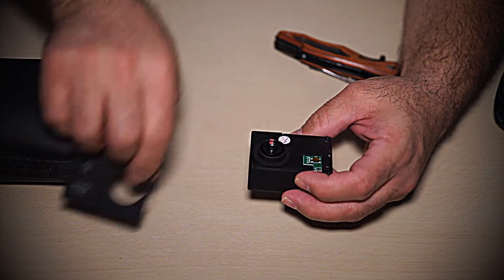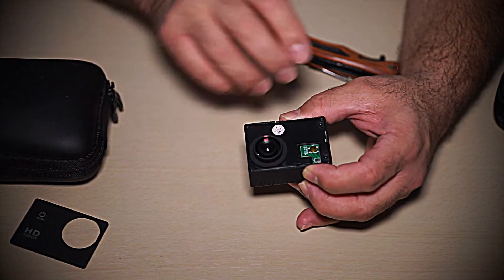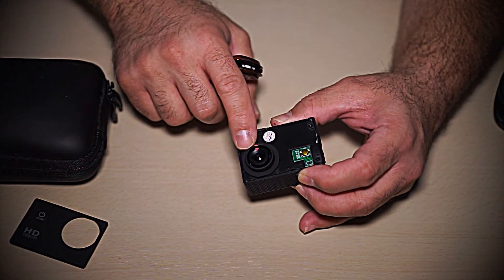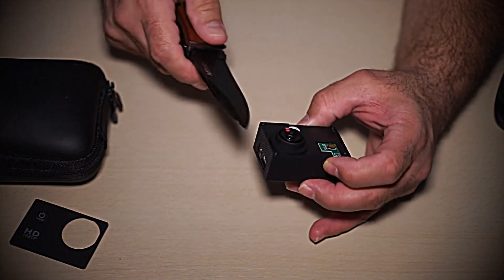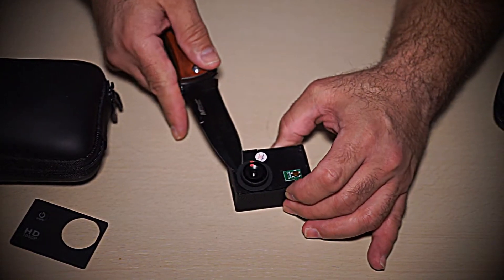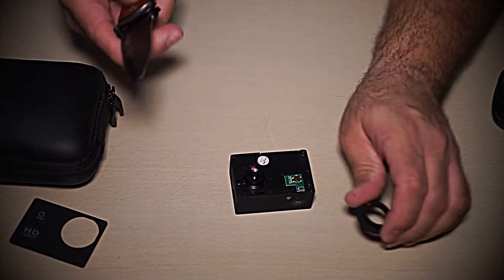No big deal. Now there's a ring around the lens. Remove that. It pops right off with a knife. Put that to the side.